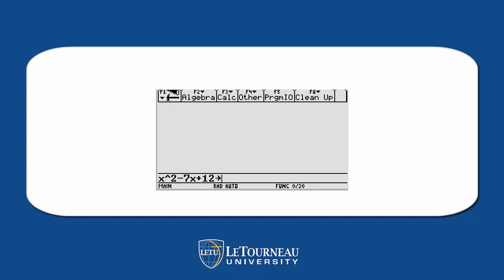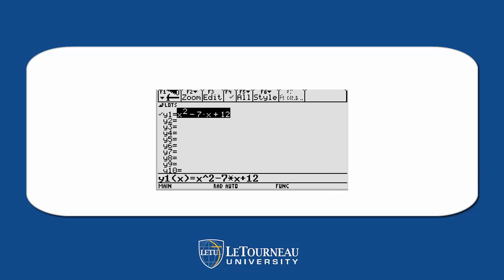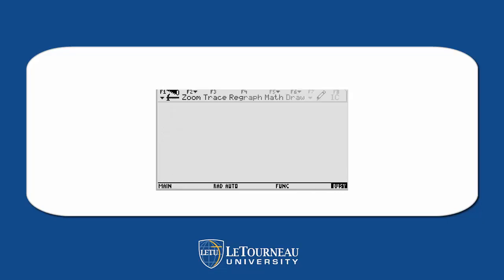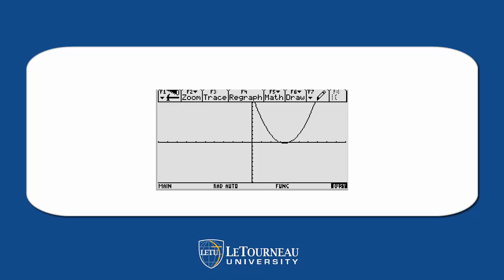Let's go to our calculators and use x² - 7x + 12. We've worked with it a little bit. Let's store it in y1 and take a look at its graph. We go zoom and zoom standard, and we wait while this graphs. And what we have here is a minimum value, just what we wanted.